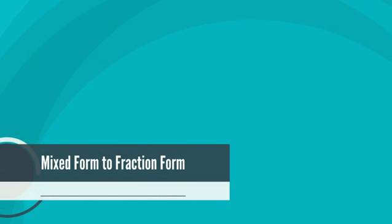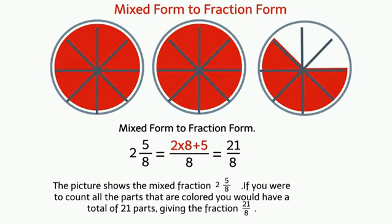Mixed Form to Fraction Form. The picture shows the mixed fraction 2 and 5 eighths. If you were to count all the parts that are colored, you would have a total of 21 parts, giving the fraction 21 eighths.